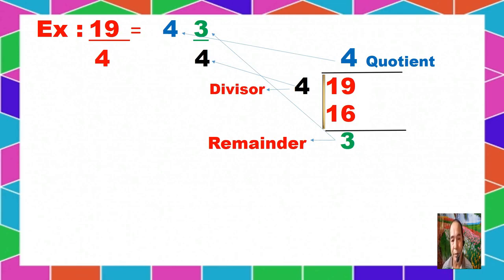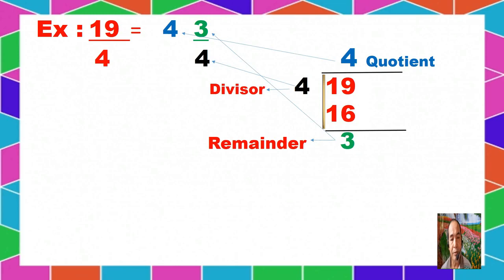We divide 19 divided by 4. The first digit quotient is 4. We multiply 4 times 4 to get 16. So 19 minus 16 gives us 3. 3 can no longer be divided by 4, so 3 becomes our remainder.